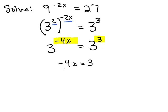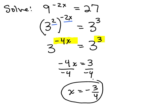So -4x = 3. Just divide both sides by -4. So x = -3/4. So it looks like that's the answer. But of course, we do want to check our answers. So let's do that.